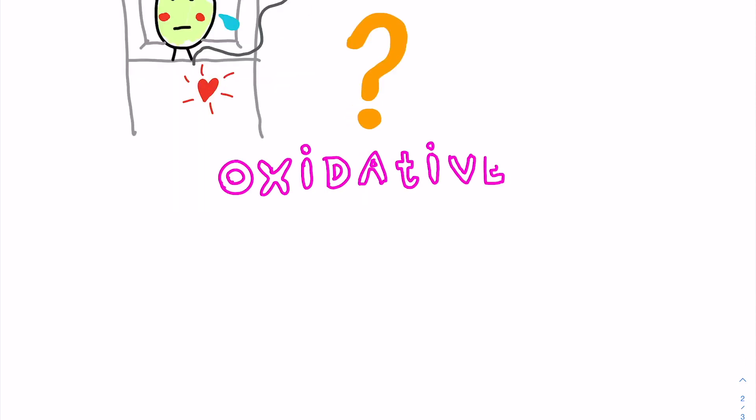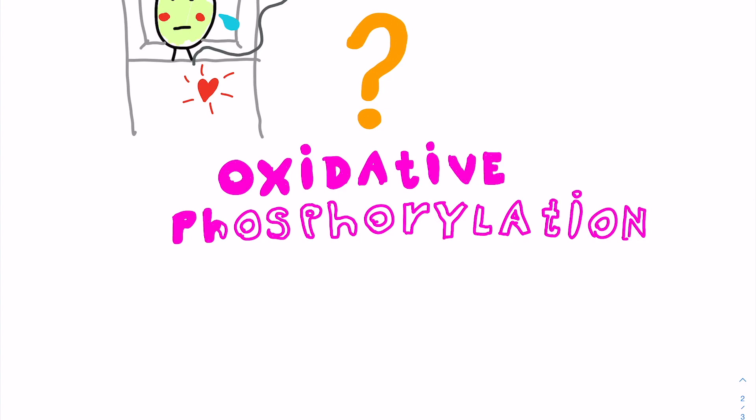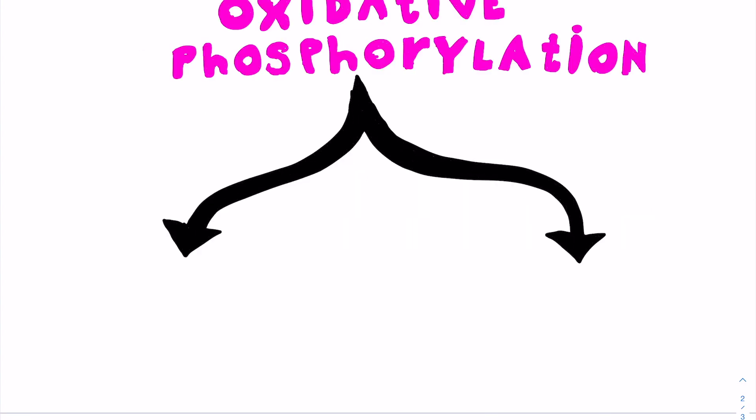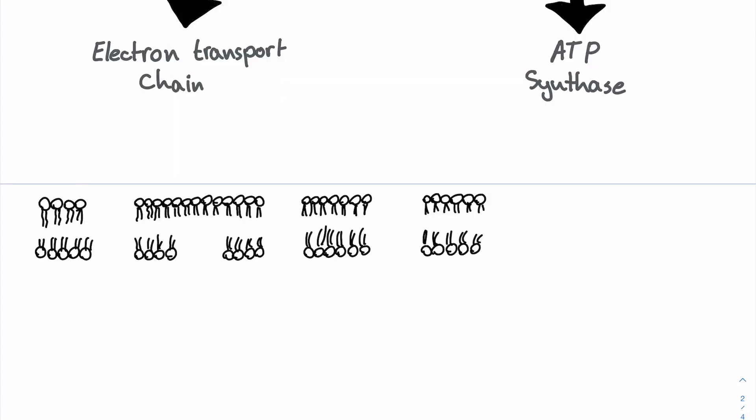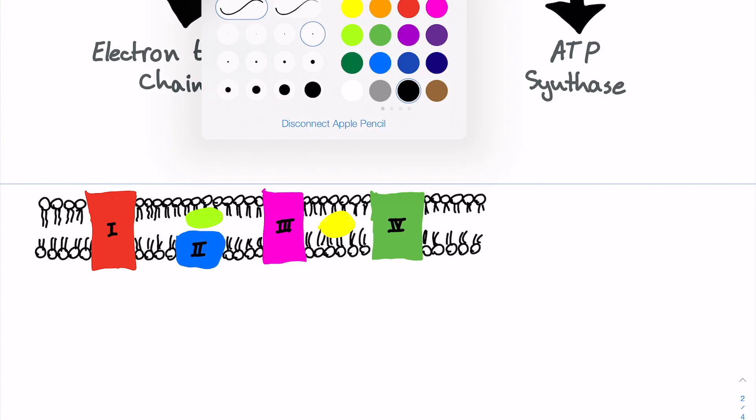And you might know this is from oxidative phosphorylation consisting of the electron transport chain and ATP synthase. The electron transport chain consists of four different complexes and is predominantly in charge of creating a proton gradient across the inner mitochondrial membrane.